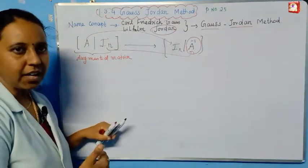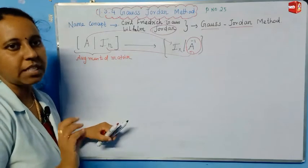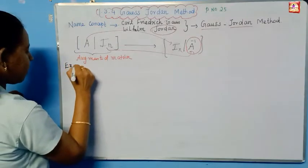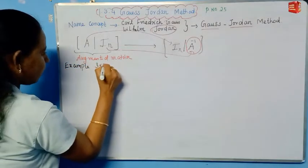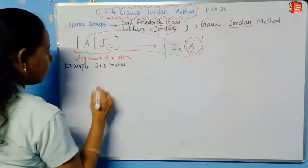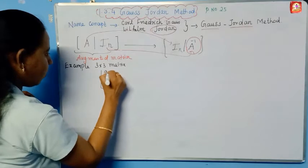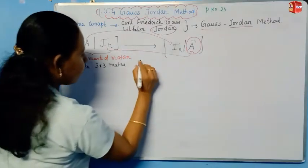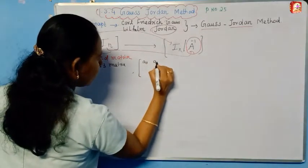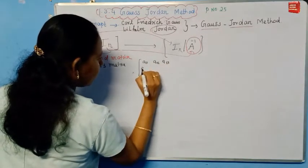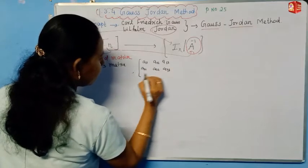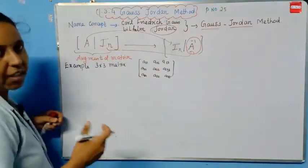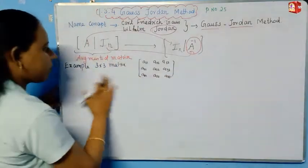Let's talk about these steps with an example. Let's take an example of a 3×3 matrix. The elements are A11, A12, A13 in the first row; A21, A22, A23 in the second row; and A31, A32, A33 in the third row. This is the general 3×3 matrix example.